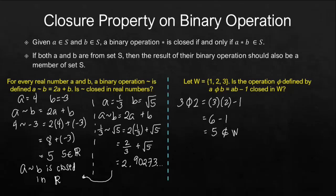So, based on this first example, we can already say that phi is not closed in W.